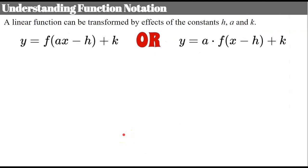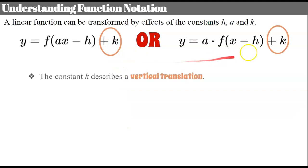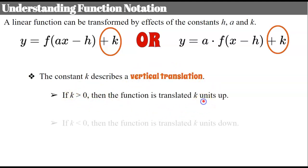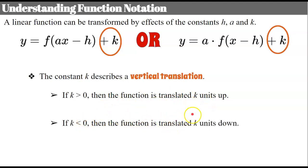Last but not least, we have our constant k outside the parentheses representing a vertical translation. If k is greater than 0 then it's translated up k units, and if k is less than 0 the function is translated k units down.